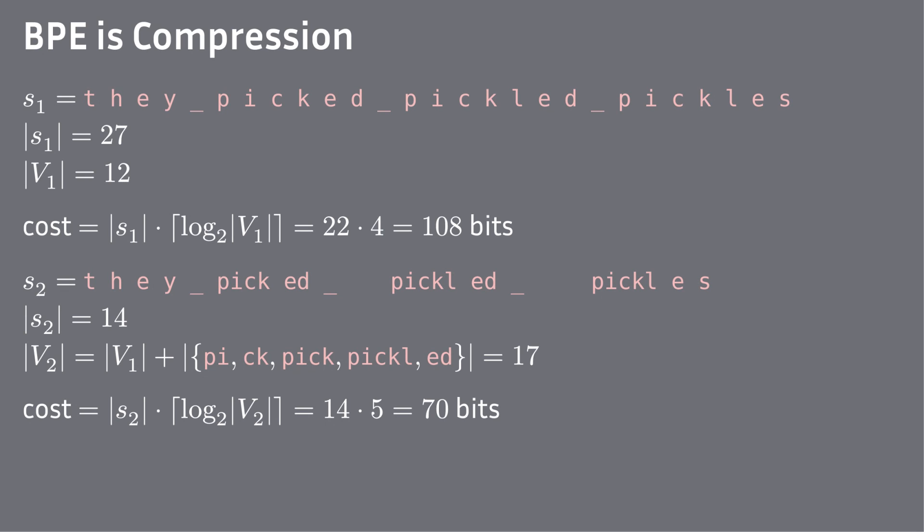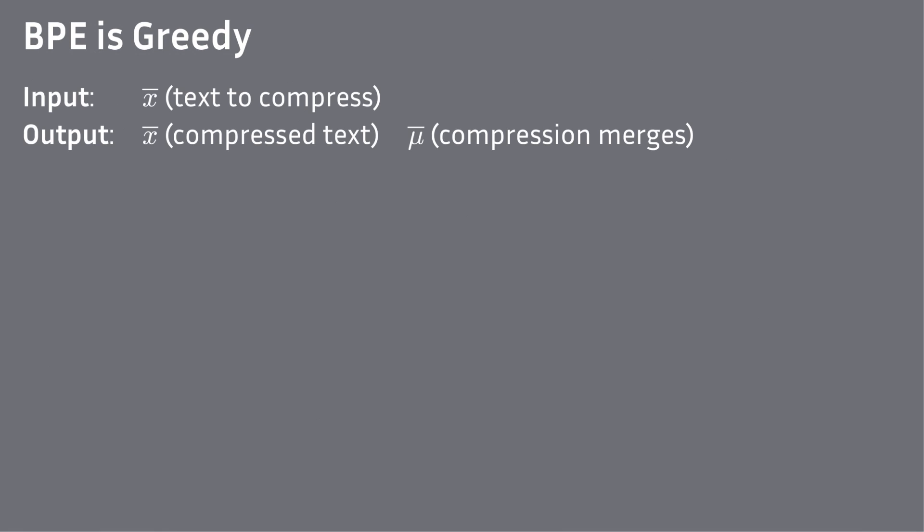Now we know that BPE is compression. However, there is one other aspect to BPE: this algorithm is greedy. To show that, we need to write it down as an algorithm. We start with the text that we want to compress, or tokenize — which is the same thing.